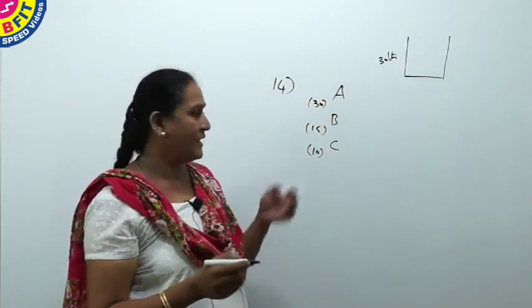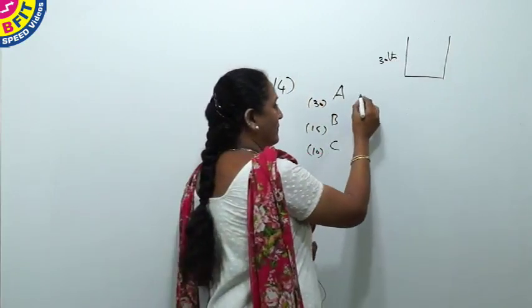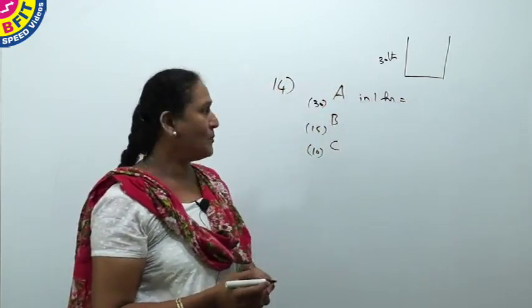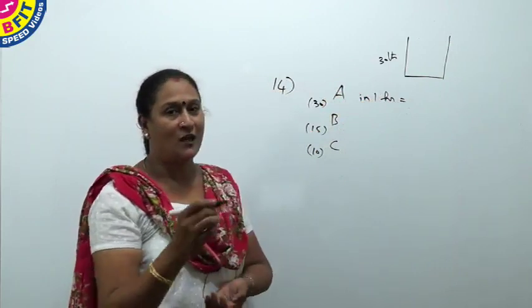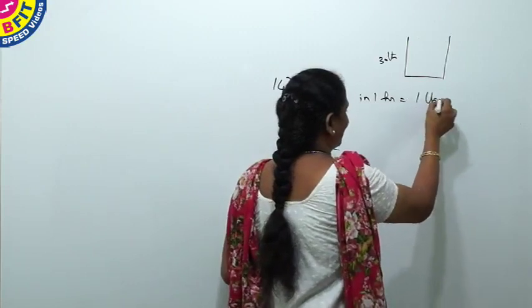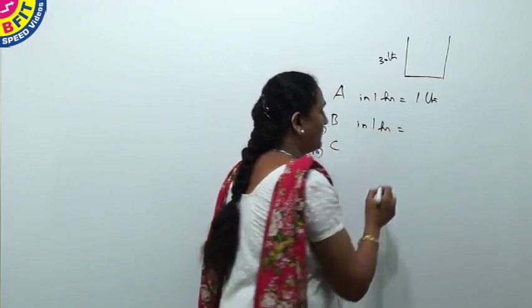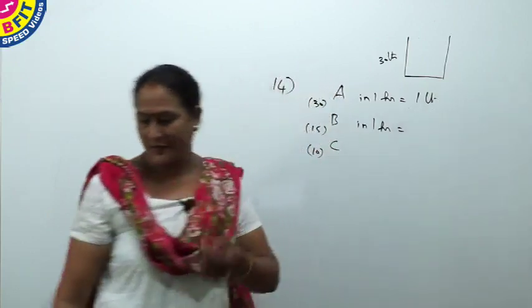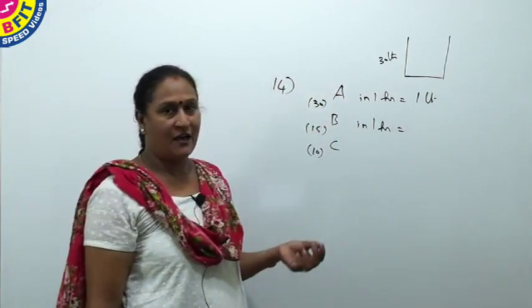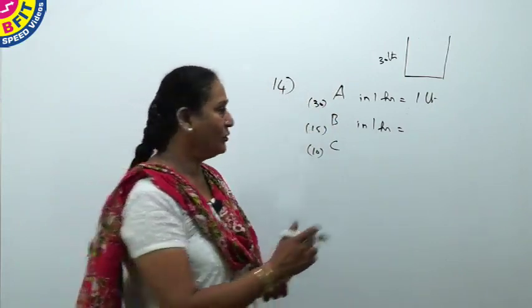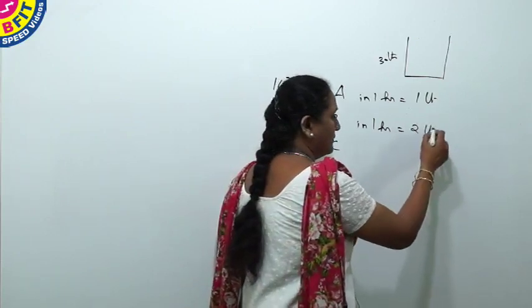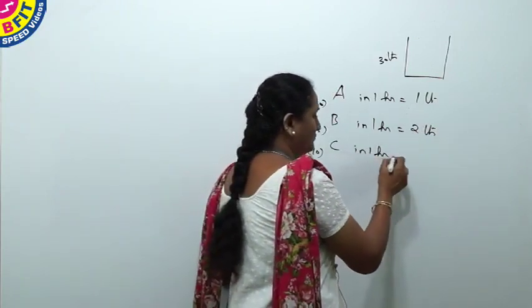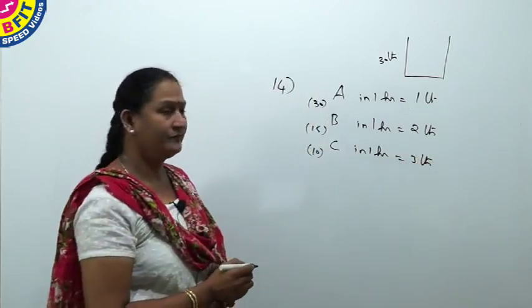We will see what is work done by A, B and C in 1 hour. This 30 liters tank, if A can fill in 30 hours, how much water A can pour in 1 hour? It is only 1 liter. What is work done by B? If B fills it in 15 hours, 30 by 15, in 1 hour B can pour 2 liters. C can pour 30 divided by 10, in 1 hour C can pour 3 liters.